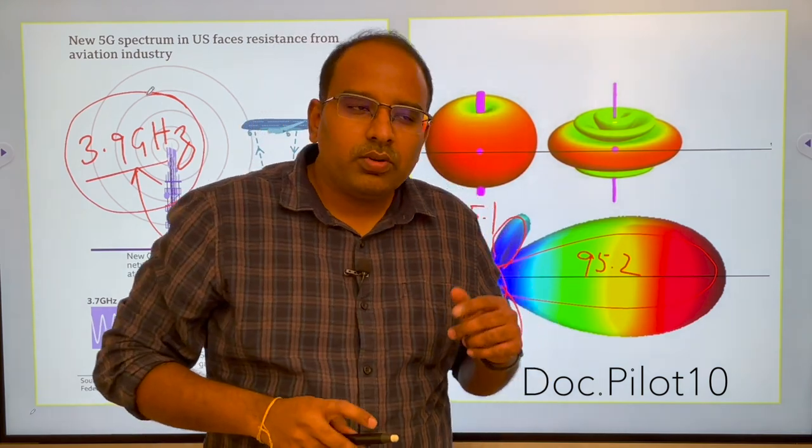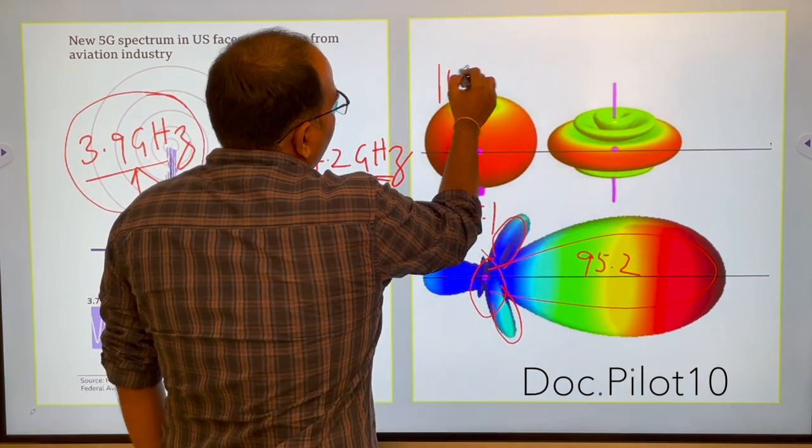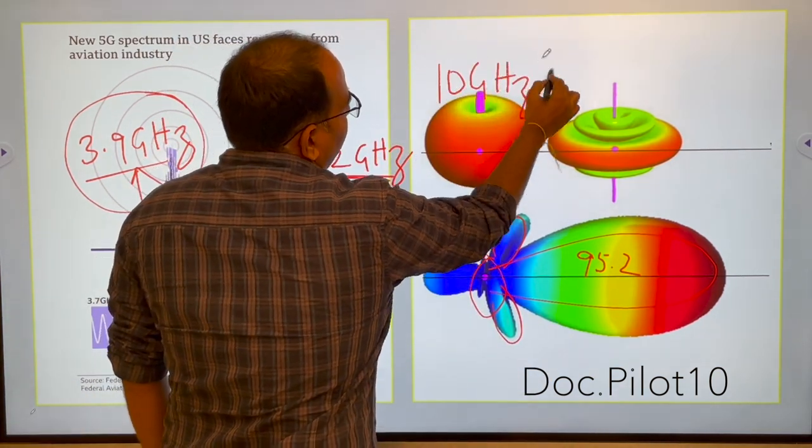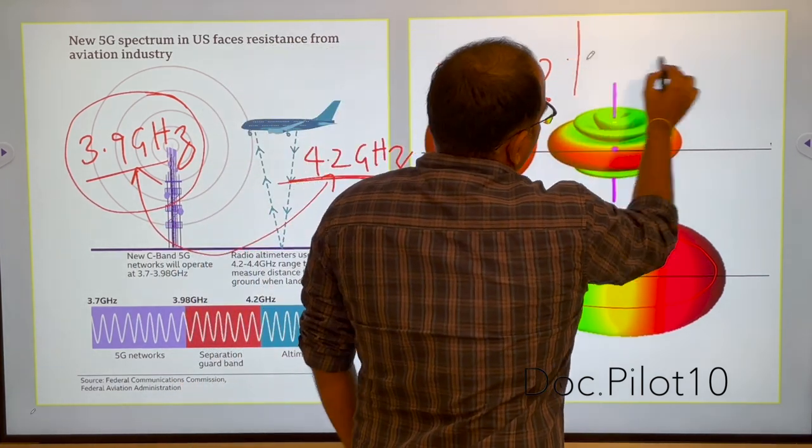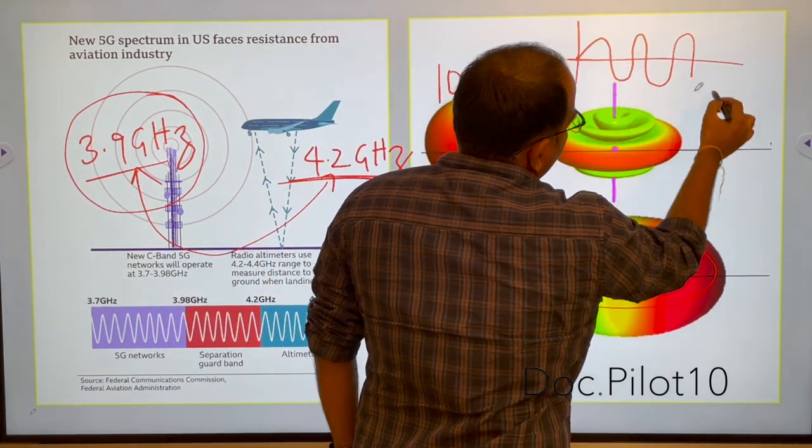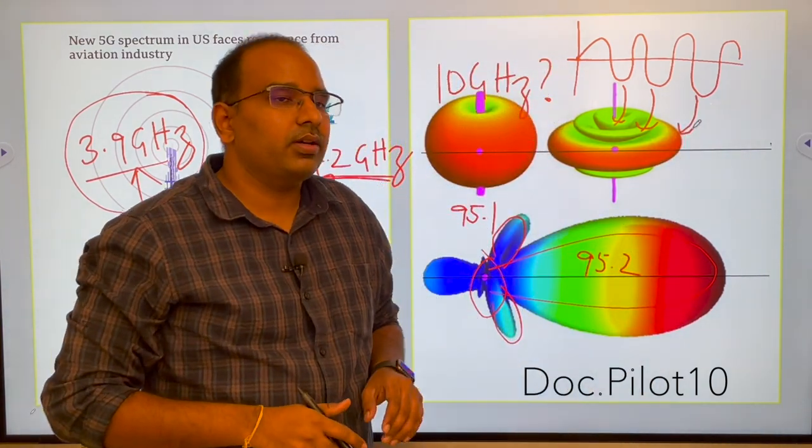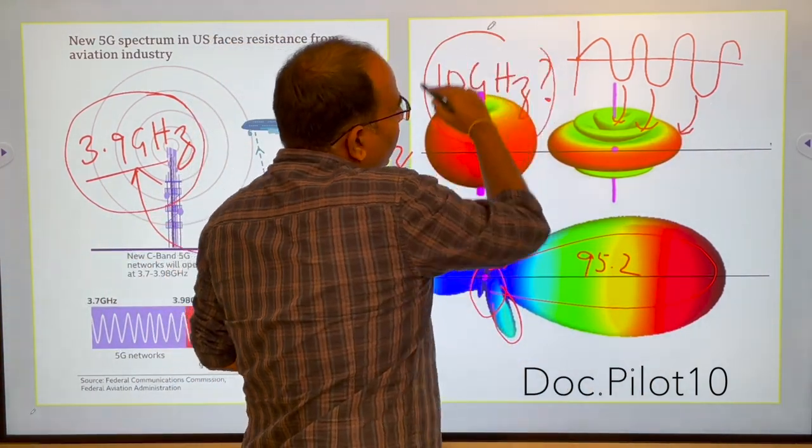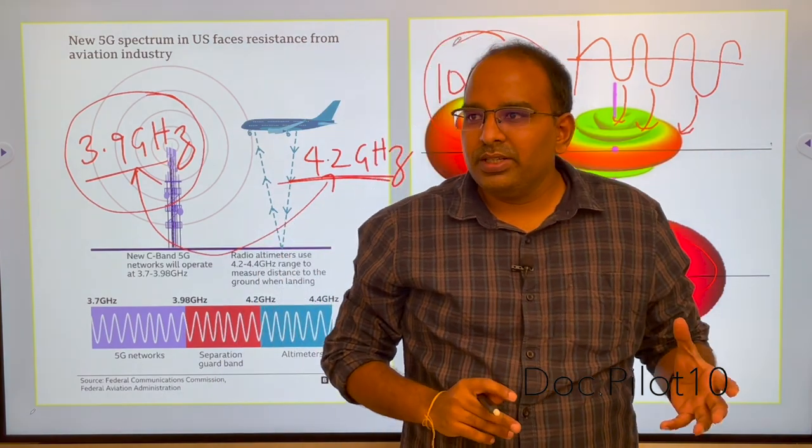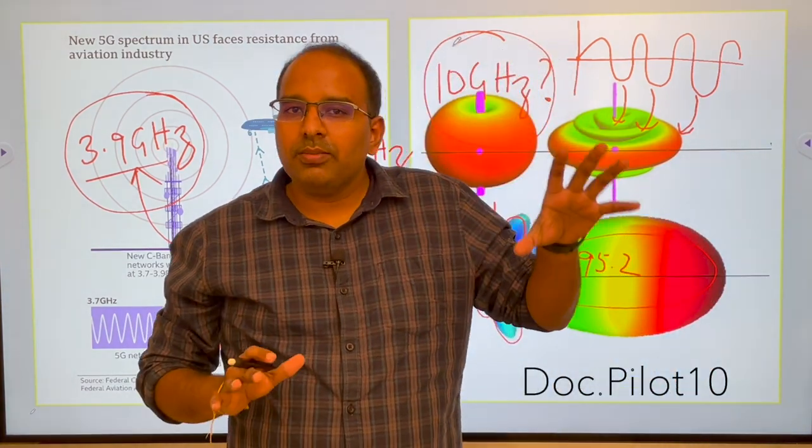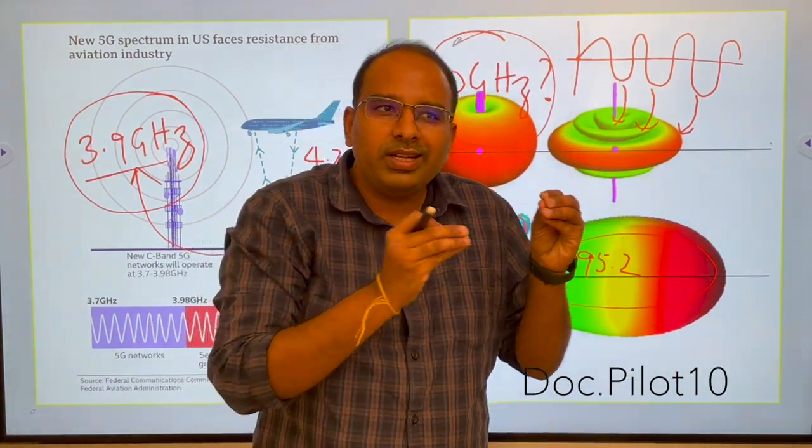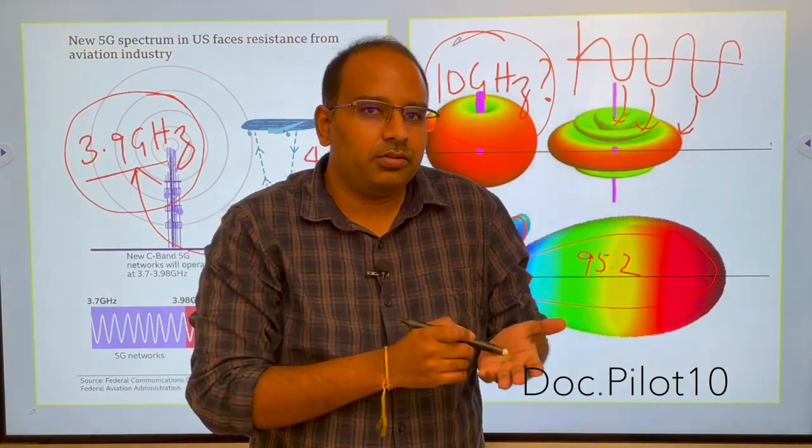Now the question is why not allocate 10 gigahertz? Now if you take this as a wave, as the frequency increases, attenuation, that means the loss of wave to the ground, increases. So if they increase to 10 gigahertz you will get good speeds, but the problem is the availability of the network is very limited. That means close to the tower only you will get the network, elsewhere you don't get.